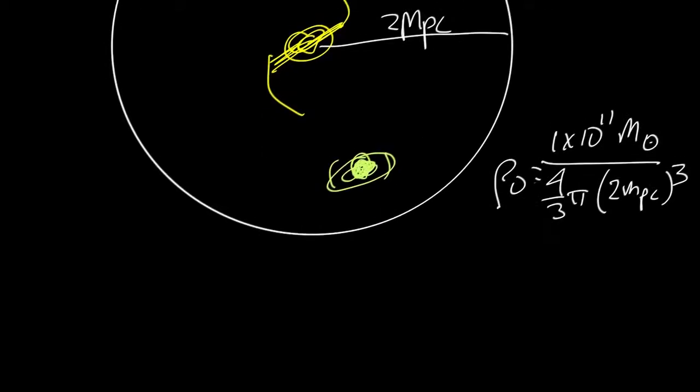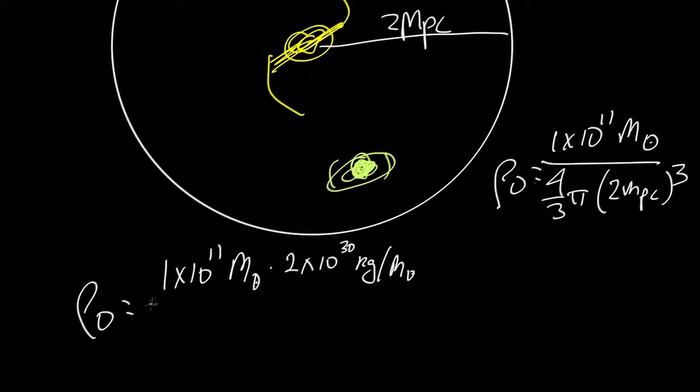Now those are not particularly useful units, so let's convert into MKS. So we get rho0 is equal to 1 times 10 to the 11 solar masses, and there are 2 times 10 to the 30 kilograms per solar mass. So that's the top part of the equation.